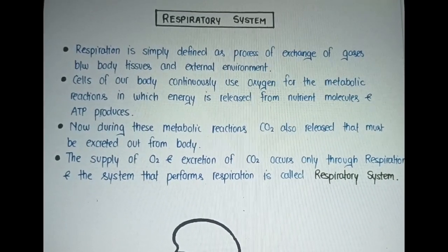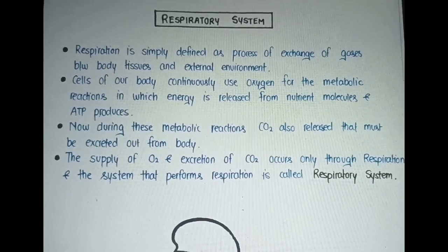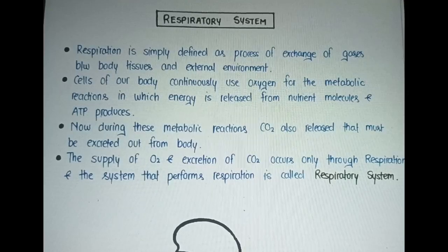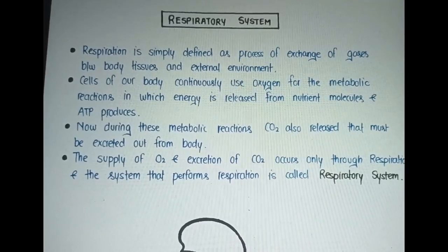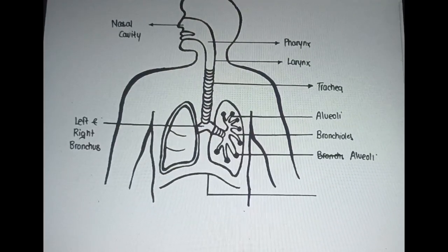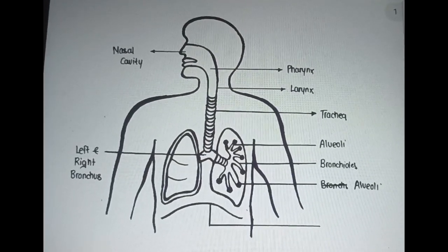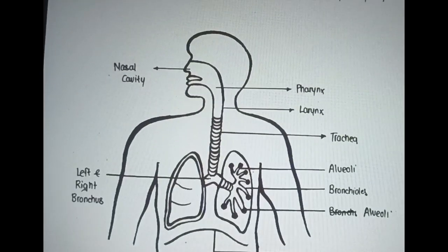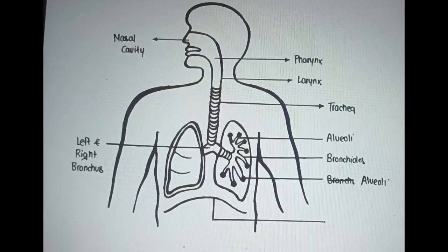Cells of our body continuously use oxygen for metabolic reactions in which energy is released from nutrient molecules as ATP is produced. During these metabolic reactions, CO2 is also released that must be excreted out from the body. The supply of O2 and excretion of CO2 occurs only through respiration. The system that performs respiration is called the respiratory system.